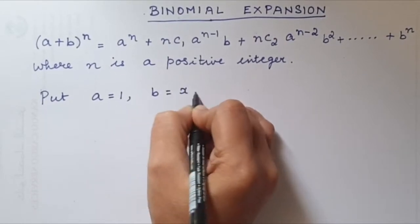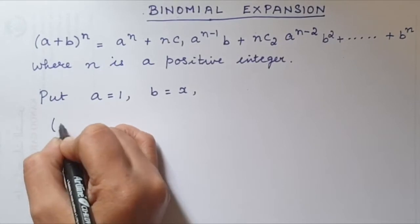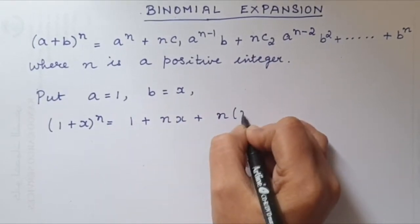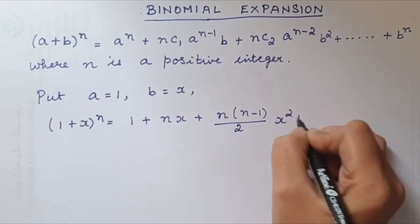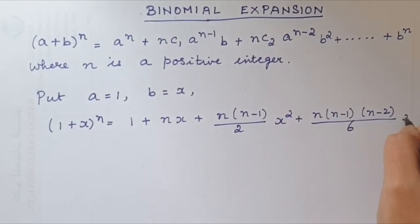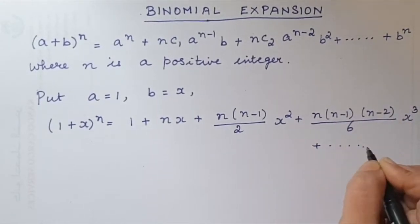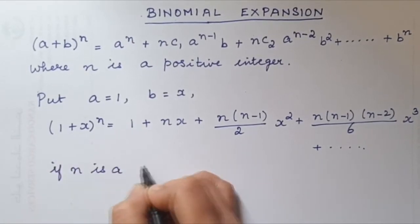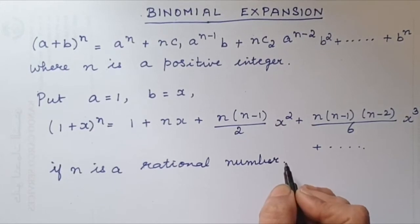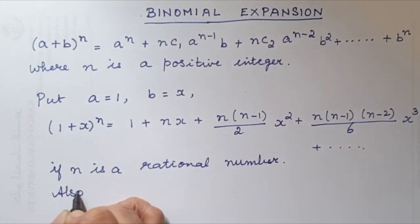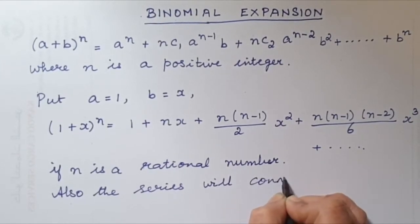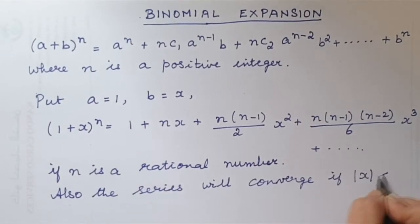(1 + x)ⁿ = 1 + nx + n(n−1)/2 · x² + n(n−1)(n−2)/6 · x³ + ... This expansion is true if n is a rational number. Also, the series will converge if |x| < 1.